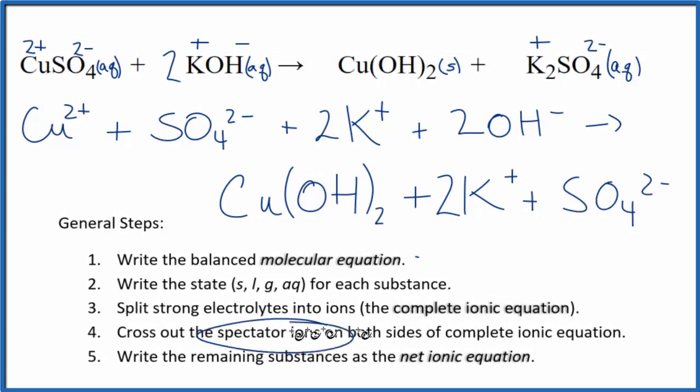Now we can cross out the spectator ions, and that'll give us the net ionic equation for CuSO4 plus KOH. So spectator ions, they appear on both sides of the equation, in the reactants and in the products. So this SO4 here, SO4 2 minus sulfate ion, I have it here in the reactants, here in the products. Cross that out.